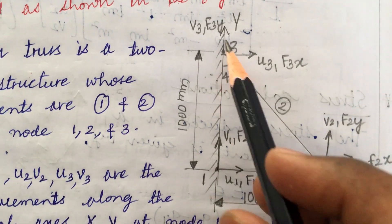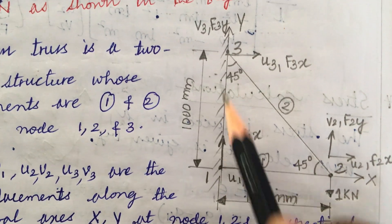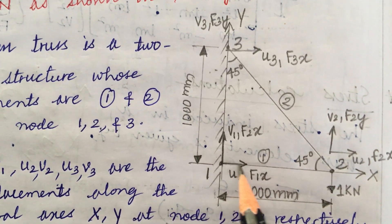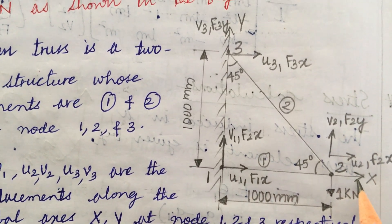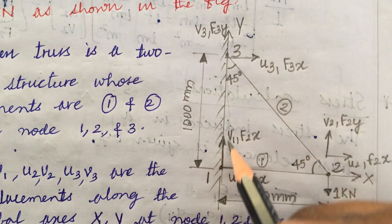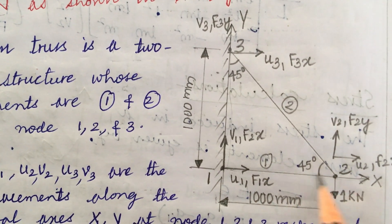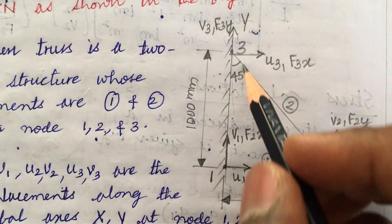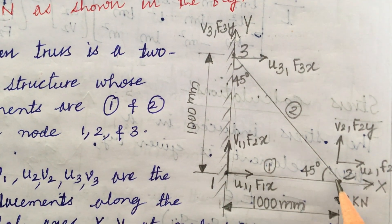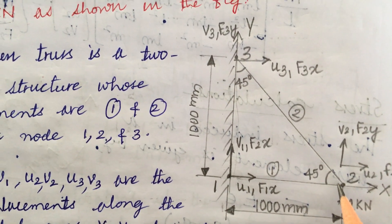If you look at this, this is a truss where one end is fixed. Here we have the x-axis along this direction and this is the y-axis. This is one element of the truss, and here we have another element of the truss, which is triangular in cross section.